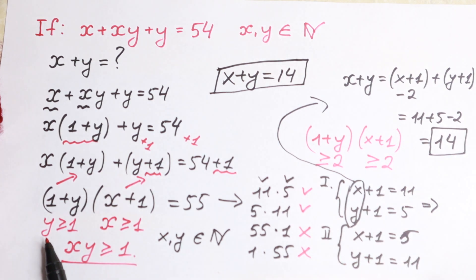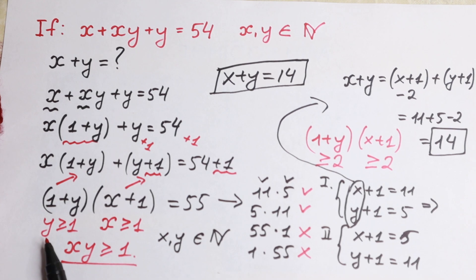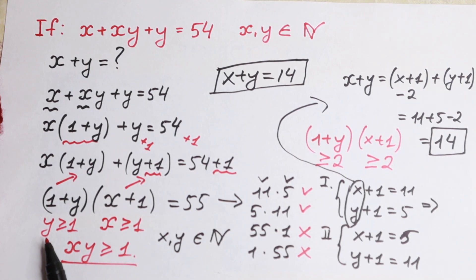So our sum x plus y is equal to 14. I hope you understand this explanation. If you don't, write your question or suggestion in a comment — it will be really interesting to read. Subscribe for more videos if you enjoyed it, and thank you so much for watching. See you in the next videos.